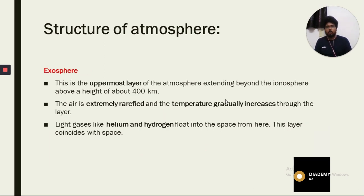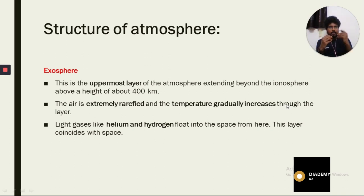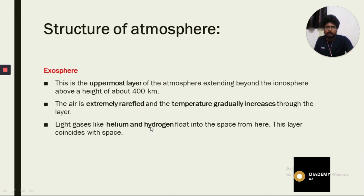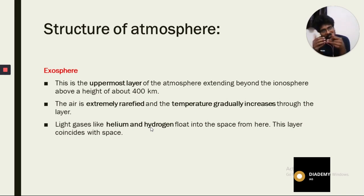Next is the exosphere, the uppermost layer of the atmosphere, extending beyond the ionosphere above a height of about 400 kilometers. The air is extremely rarefied and temperature gradually increases through the layer, as it is getting closer to the Sun with no atmosphere to absorb heat. Light gases like hydrogen and helium escape into space from here, so this layer coincides with space itself.